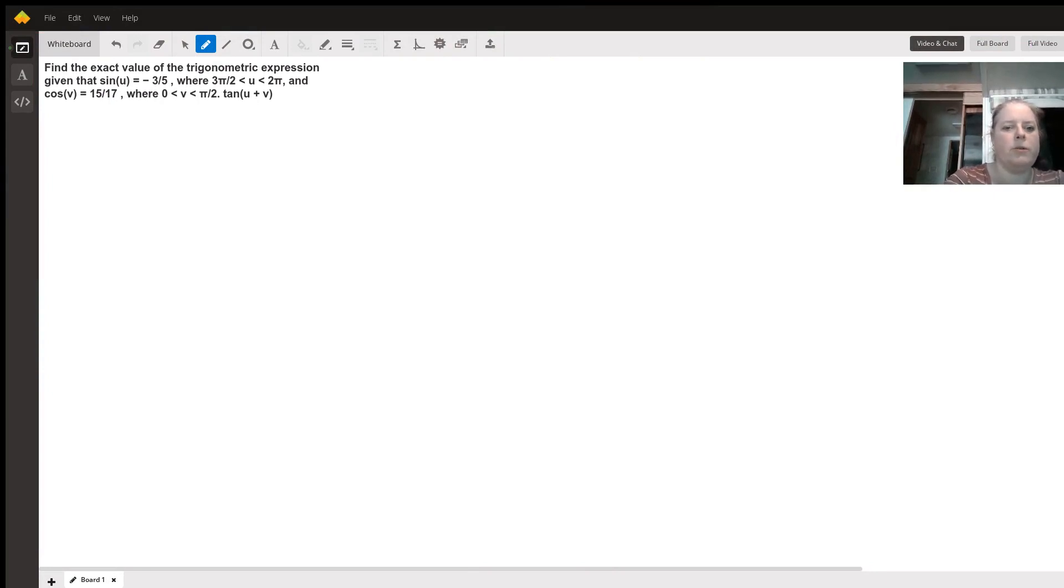The very first thing I like to do is start with each letter and draw a coordinate plane. So here, this for u, it tells us it's between 3π/2 and 2π. And remember, that means it's in quadrant 4. So we're going to draw a triangle in quadrant 4. This will be our u triangle.